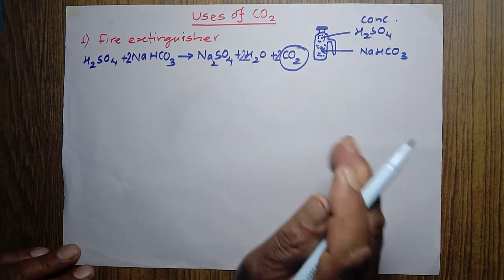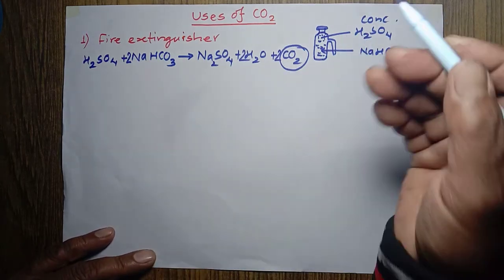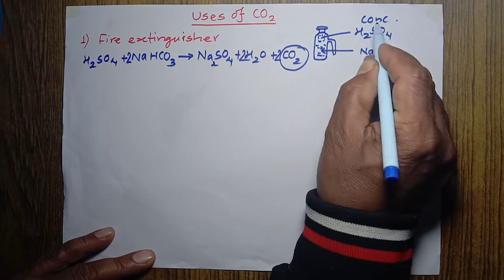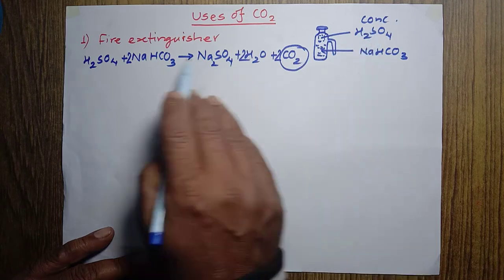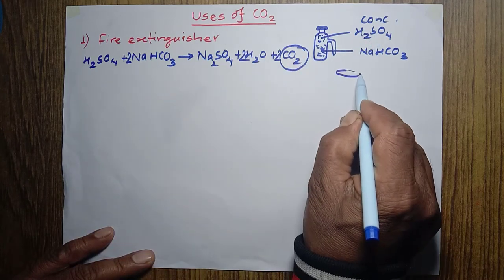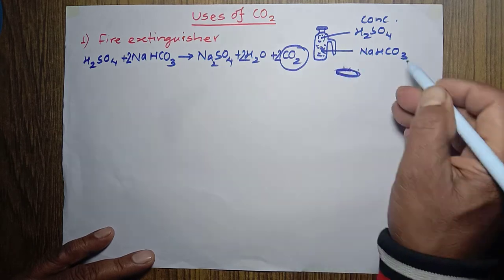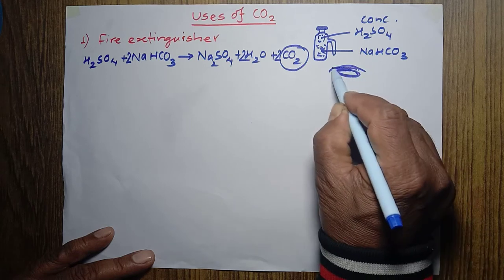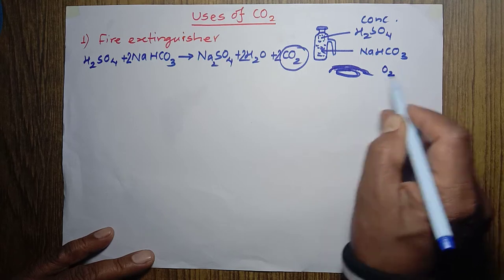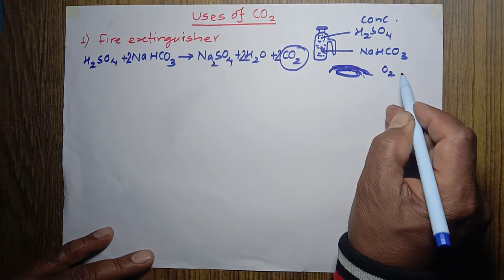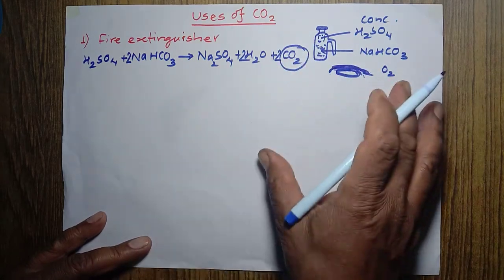When we break the glass vessel, the two chemicals come into contact and carbon dioxide gas is produced. This CO2 spreads over the burning substance, forming a blanket that cuts off contact between atmospheric oxygen and the burning substance. Without oxygen, nothing can burn — this is how carbon dioxide acts as a fire extinguisher.